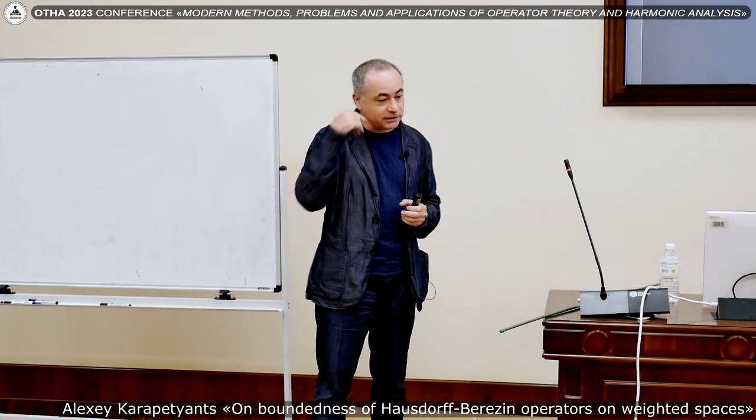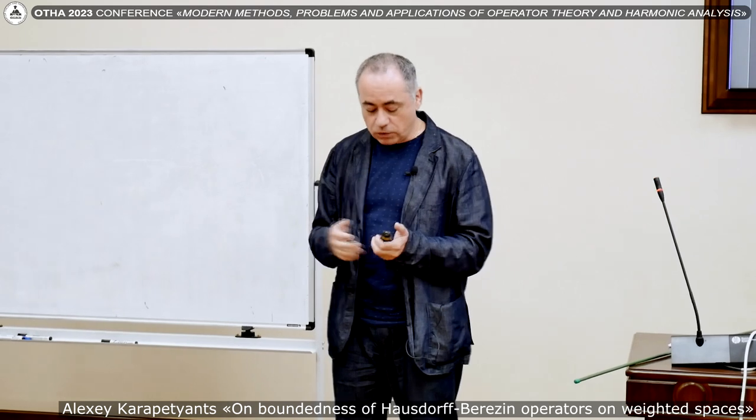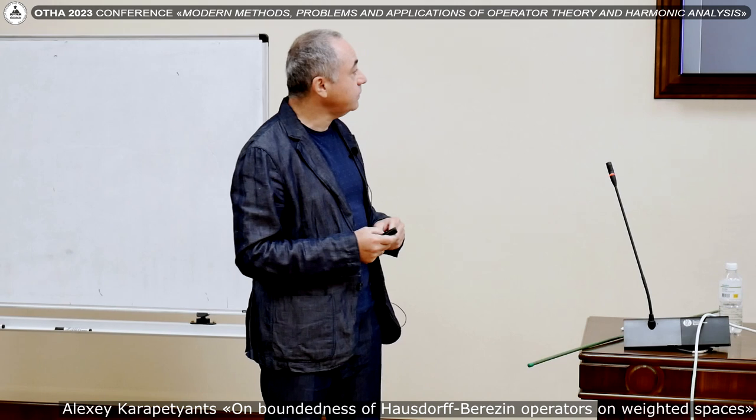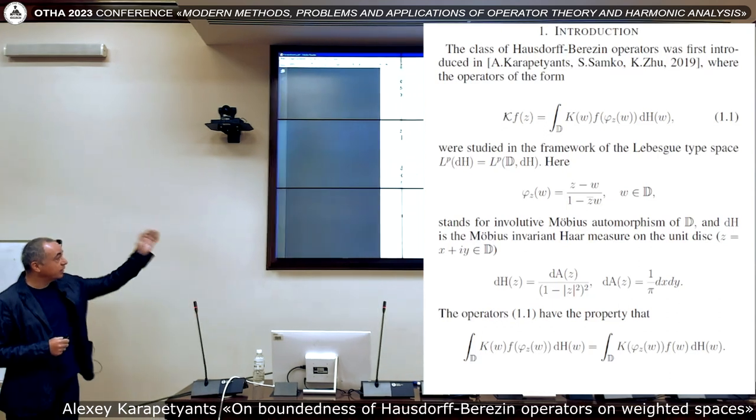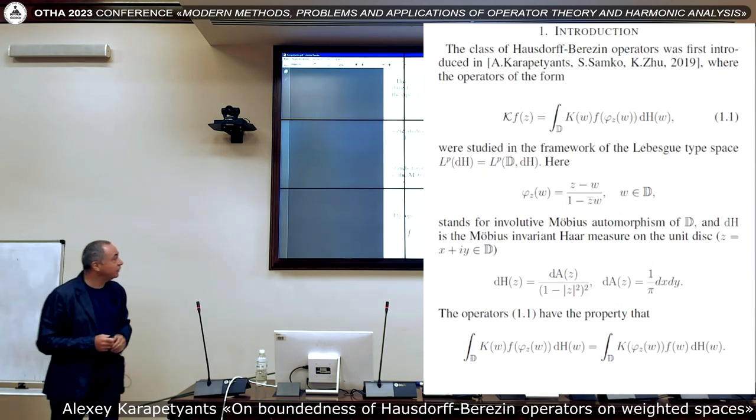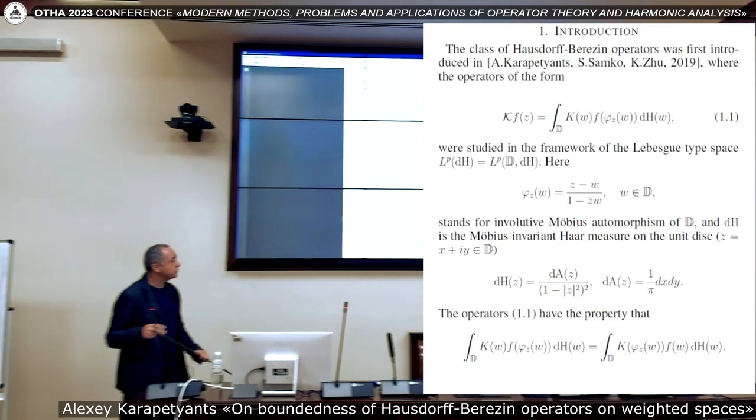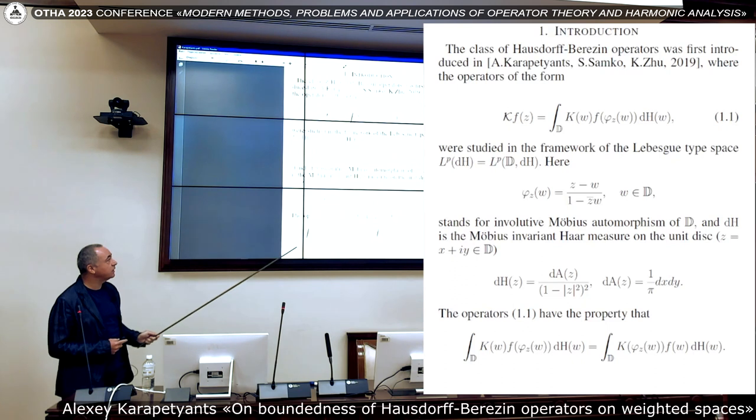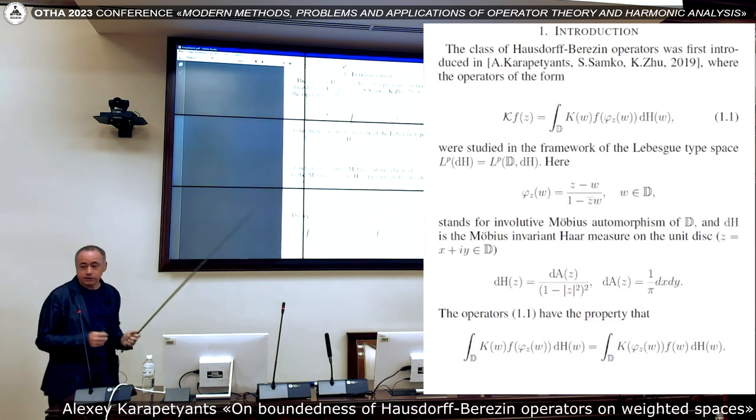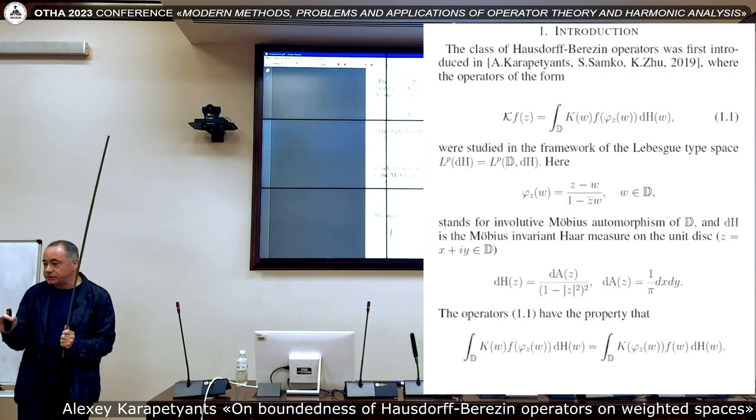And instead, we started to think that maybe not just plain calculations, but instead using the idea of how to define a new class in complex analysis, just using an idea of operators with homogeneous or Hausdorff type. And this was realized when we take a look at a certain transformation of the unit disk. φ_z of w here is the Möbius transform. Here, Haar measure, which is invariant with respect to the Möbius transform. And so we started with operator 1.1. Here you have q of w as a measurable function, and you see f at the point φ_z of w, some sort of convolution.